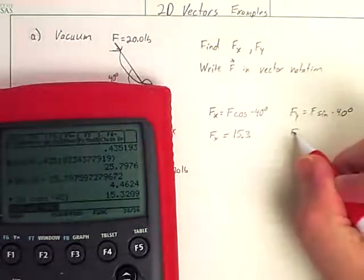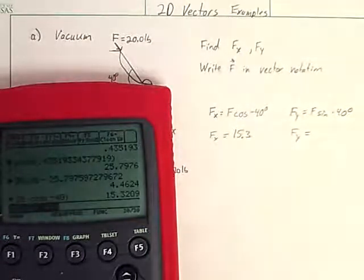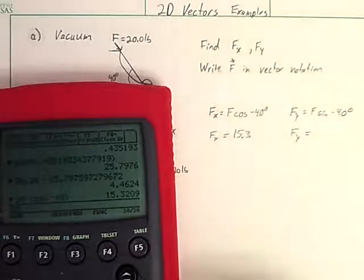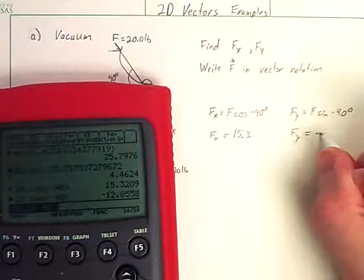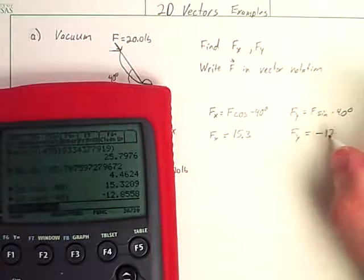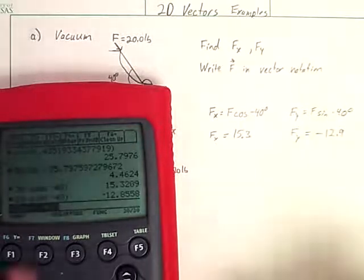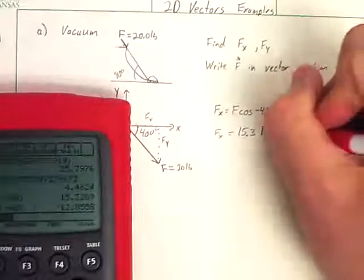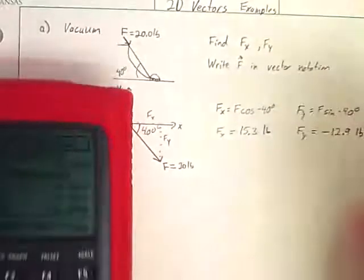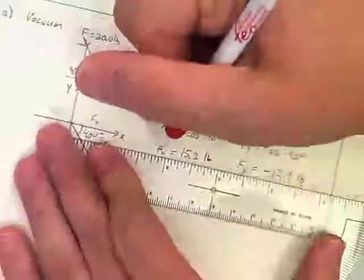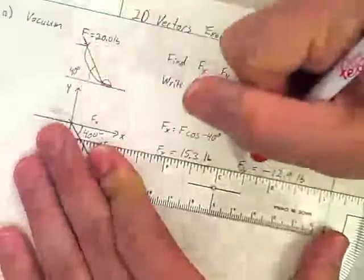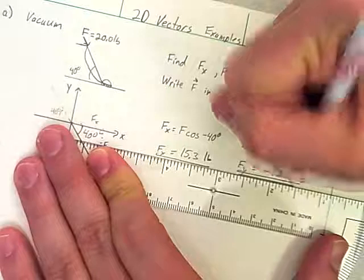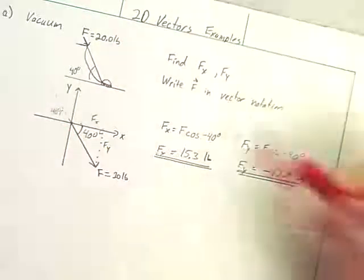And for Fy, I get 20 times the sine of negative 40 degrees, and I get negative 12.9. Units on these are pounds. Don't forget those. These would be pounds force, not pounds mass. So that's the first half of our answer. We got Fx and Fy.